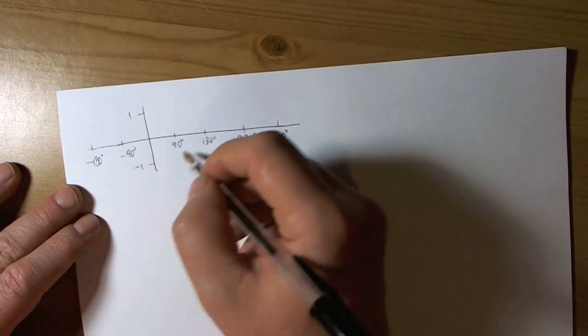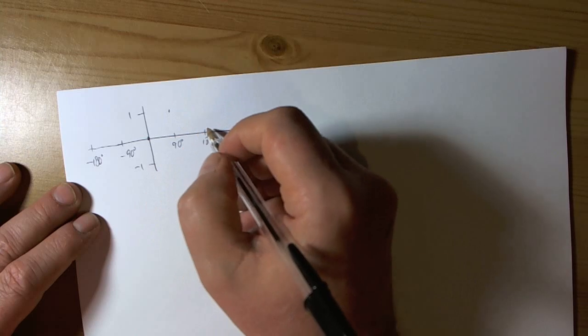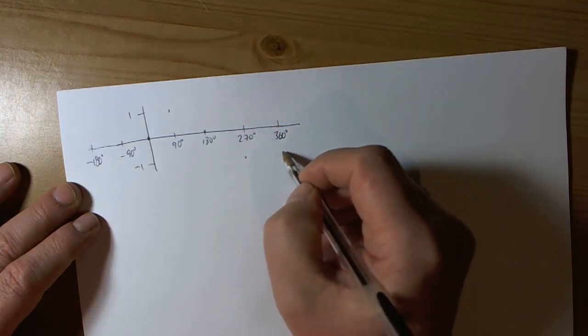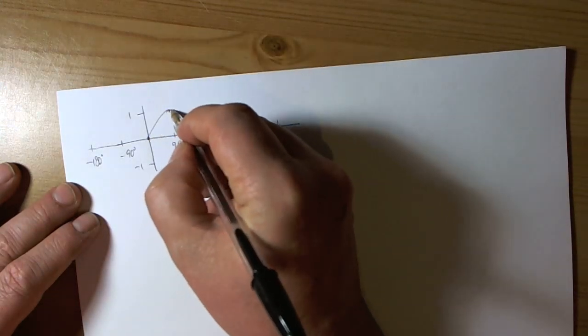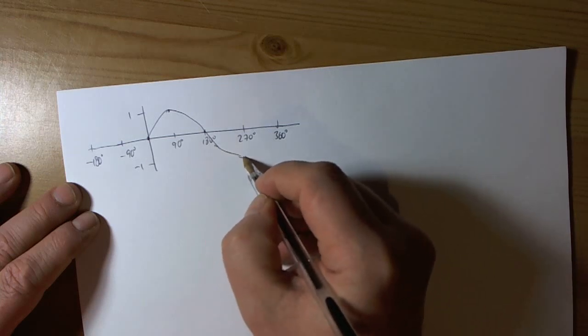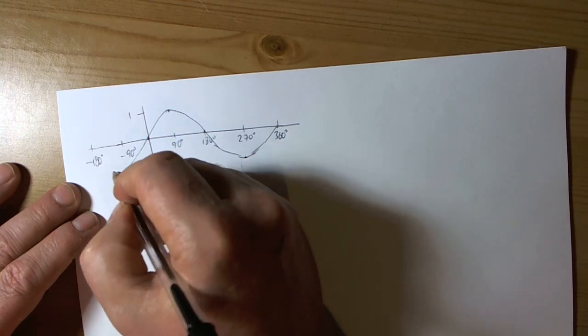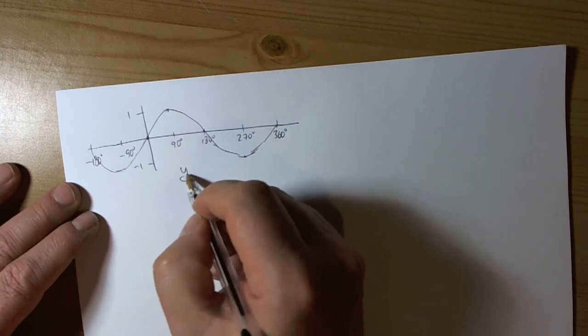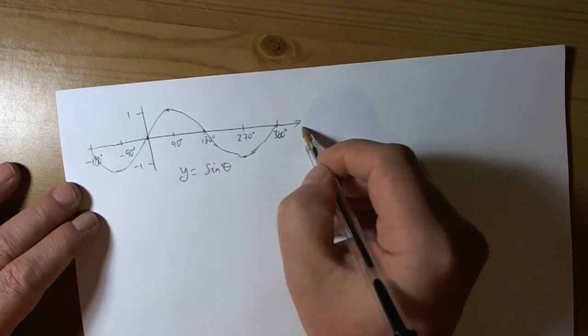So the sine curve starts at 0, peaks at 1, comes back down, bottoms out at minus 1 and then comes back. So the general sine curve, we need to remember the key points and then it just keeps repeating itself. This is y equals sine of theta, theta being any angle.